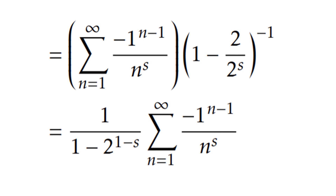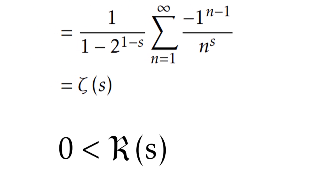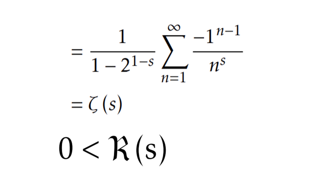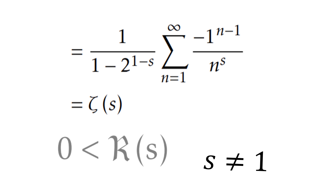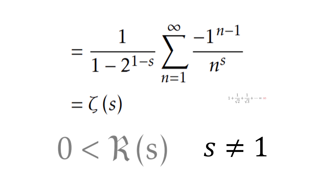Finally, we just need to move this value and make it a little bit simpler. Here you have a new zeta function that converges for the real part of s greater than 0. The domain of this function has been extended from real part of s greater than 1 to real part of s greater than 0, with the exception of s equals 1. In other words, many sums that used to equal infinity now converge to a finite value.